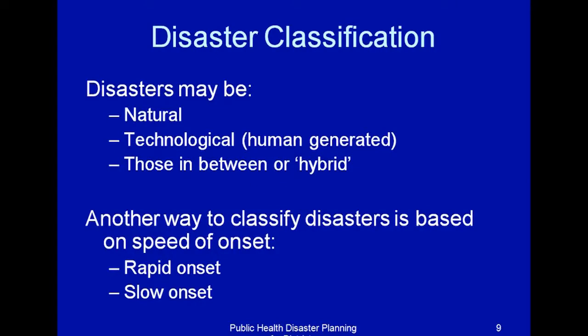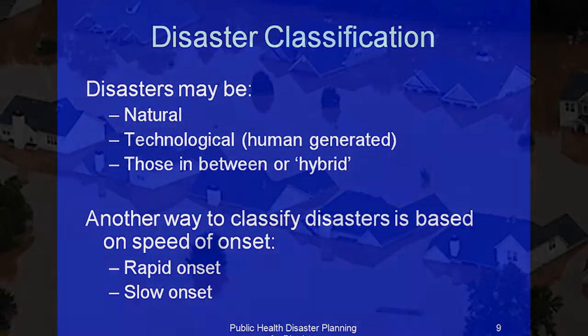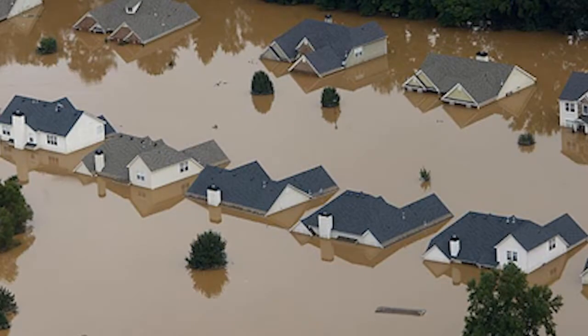Another way to classify disaster is based on the speed of onset. Some disasters are rapid, just quick. Some disasters are slow. For example, we have floods. There are some floods which happen without warning — the rains fall on the mountains, but at the lowlands the floods happen. You don't have rain, but we have floods. That is rapid onset.